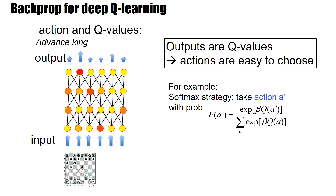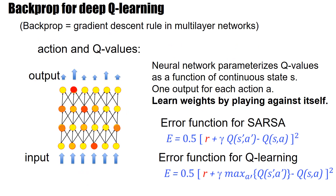For example, we can use the softmax strategy for a given action a-prime. The question then is how can we optimize the parameters of the network so that the Q-values have representative values? We do this by learning weights during many trials where the algorithm plays against itself. If you use the SARSA algorithm, then the error function is the one we discussed before. Similarly, if the aim is to use Q-learning to have an optimal strategy, then the error function is analogous.